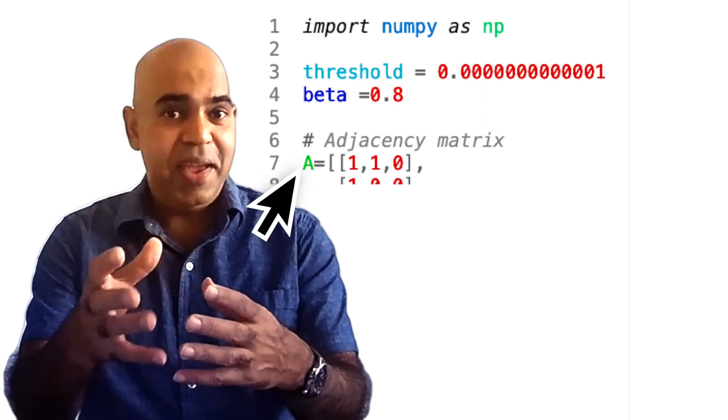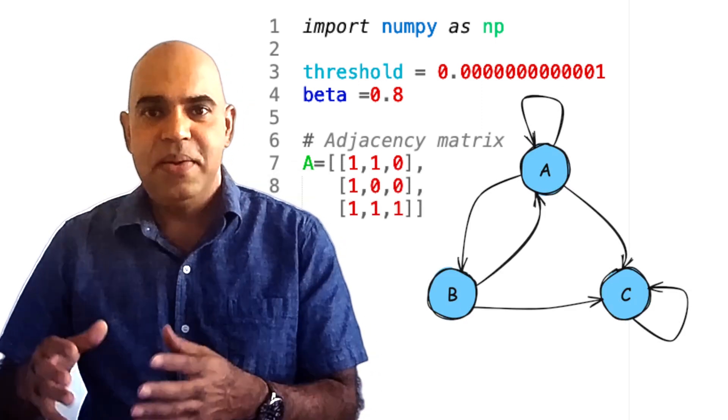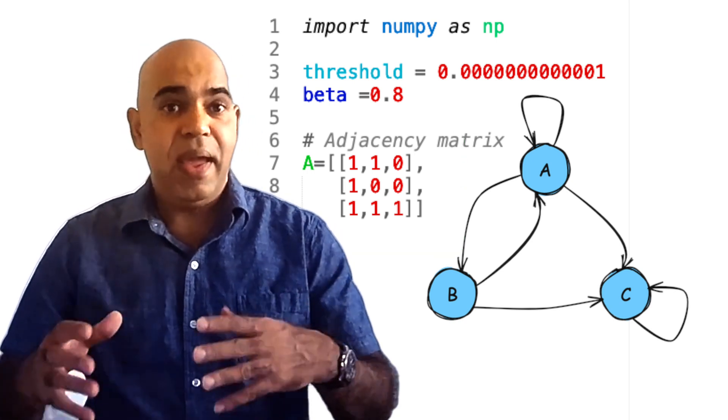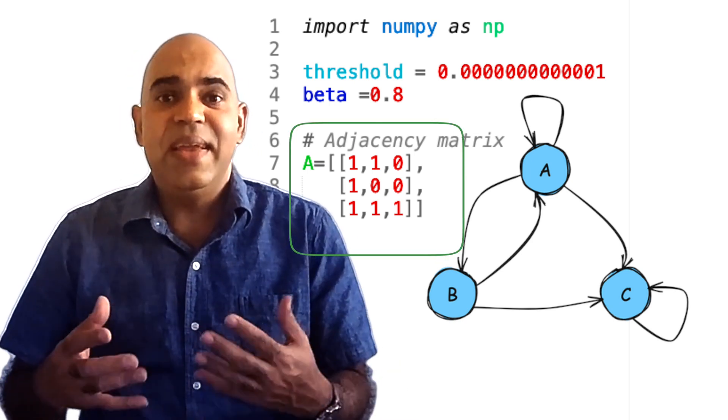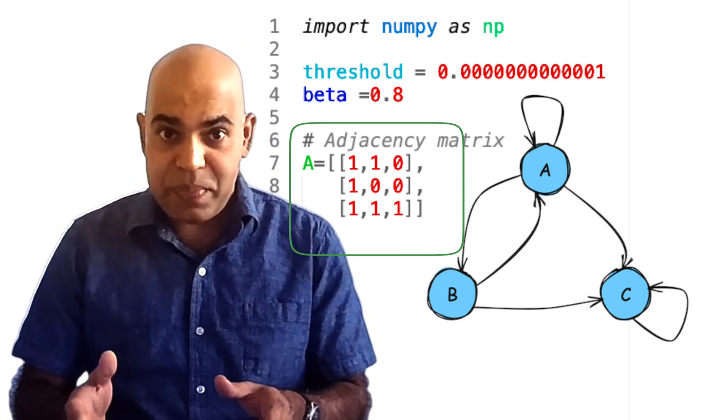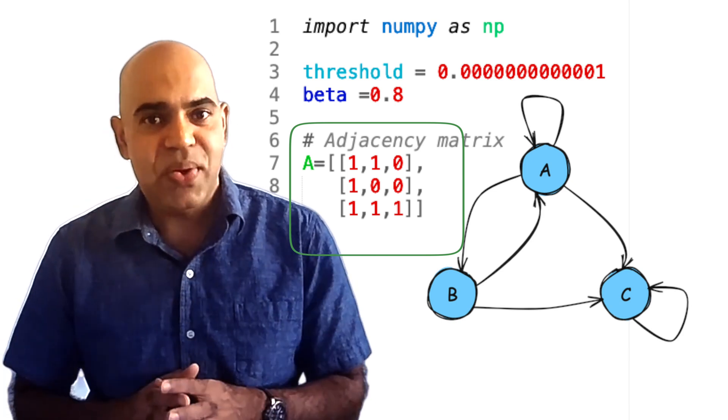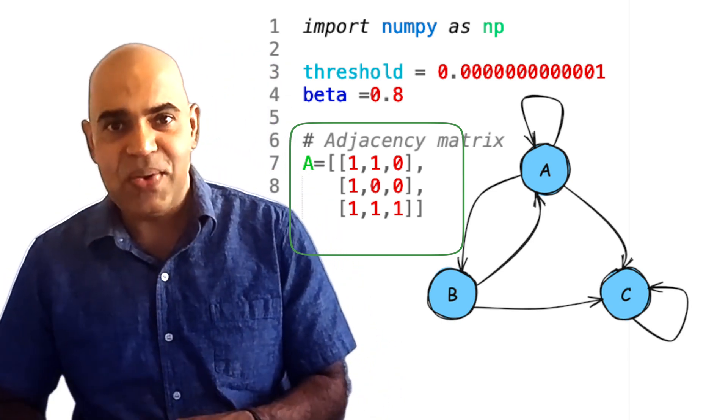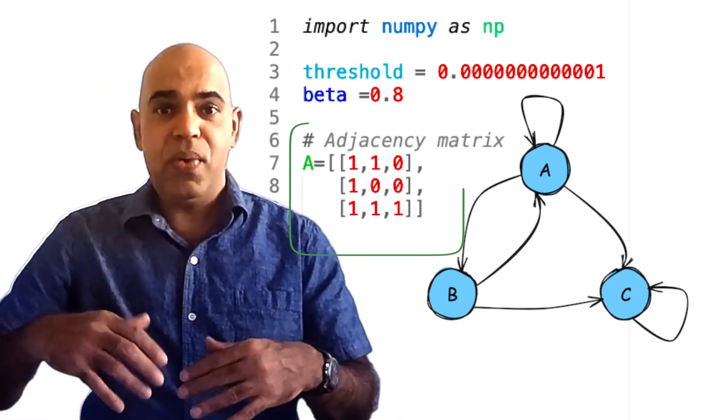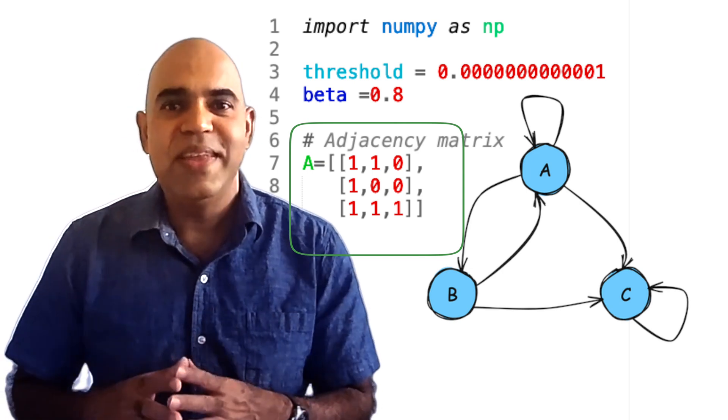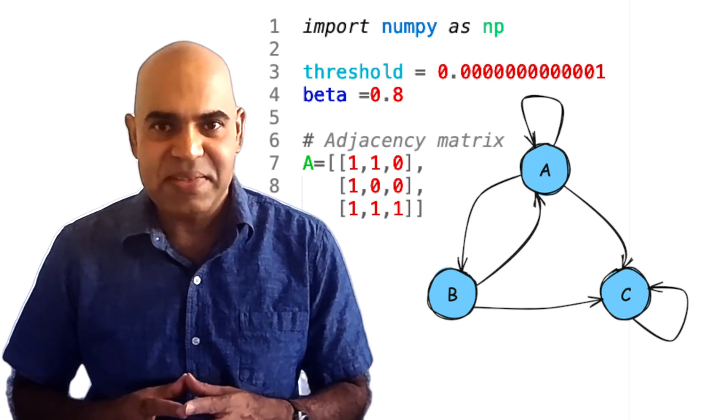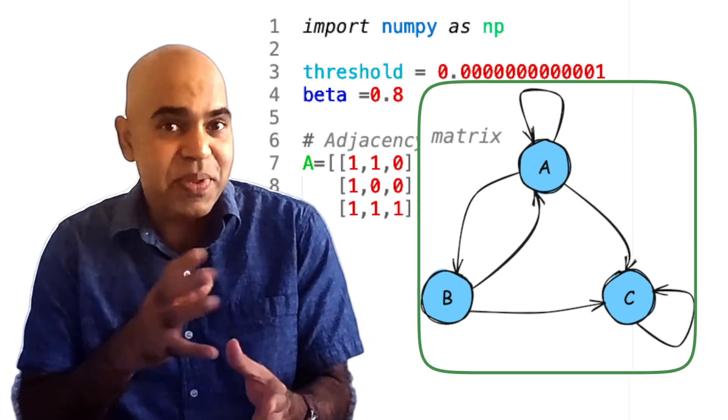Then we define a 2D list A. This is the internet that this adjacency matrix is representing. A 1 in the adjacency matrix indicates a link from one web page to another. Note that a column represents the source node and a row represents the target node. That means outgoing links are encoded from column to row. Here we are using the same approach for the adjacency matrix that we used in the first video of the PageRank series. This specific graph is from the previous video. It includes a spider trap.